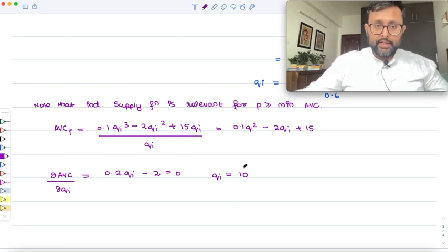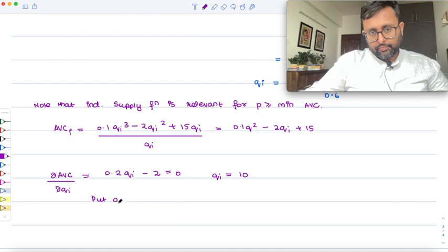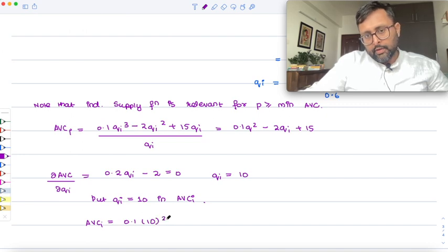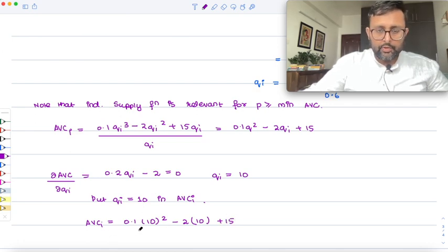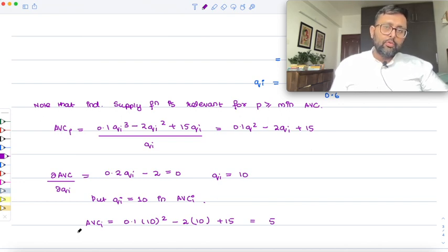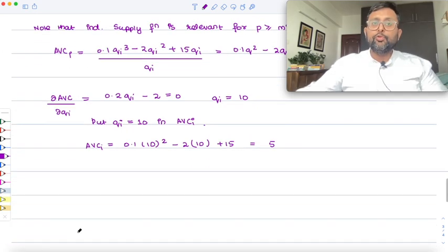So you have your Qi equals to 10. So at Qi equals to 10, you'll find out the AVC. That will give me the price below which you won't be producing anything. So please write, put Qi equals to 10 in AVCi. So what will that give me? AVC is going to be 0.1 × 10² minus 2 × 10 plus 15. So I think this is going to give me 5. This is going to give me 5. Now the point is, if the price is going to be below 5, I won't be producing anything. Being this particular ith firm, I won't be producing anything because I will find it profitable for me to produce nothing.